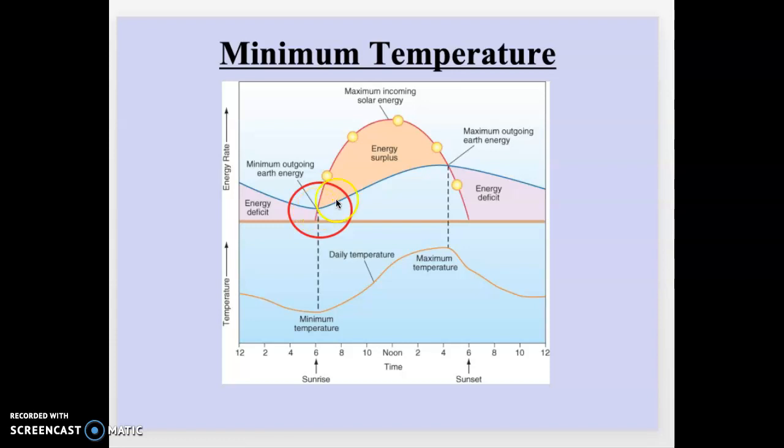After the sun has set, you're getting in similarly low amounts of energy. So throughout this point, the energy has bottomed out, but it takes time for the Earth to give up energy. So it continues to do so, and the temperature continues to decrease.